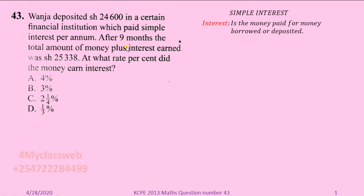Now, because of either borrowing or depositing, this is money and this is business which financial institutions do. So if you deposit your money — like this person Wanja, who deposited 24,600 in that institution — that money stayed there for a period of nine months. Afterwards, this person withdrew the money and found that the amount withdrawn was 25,338. Any extra coin that was earned is what we are calling interest, and this interest is simple interest.